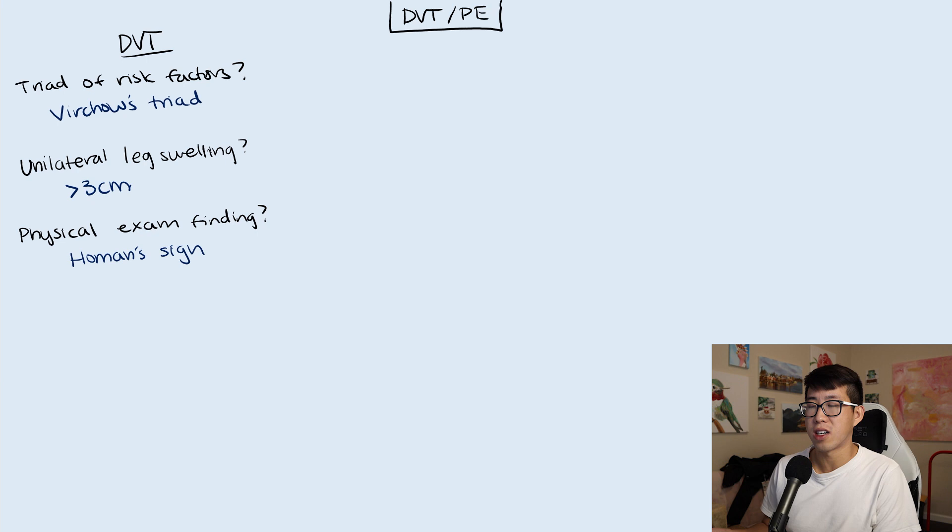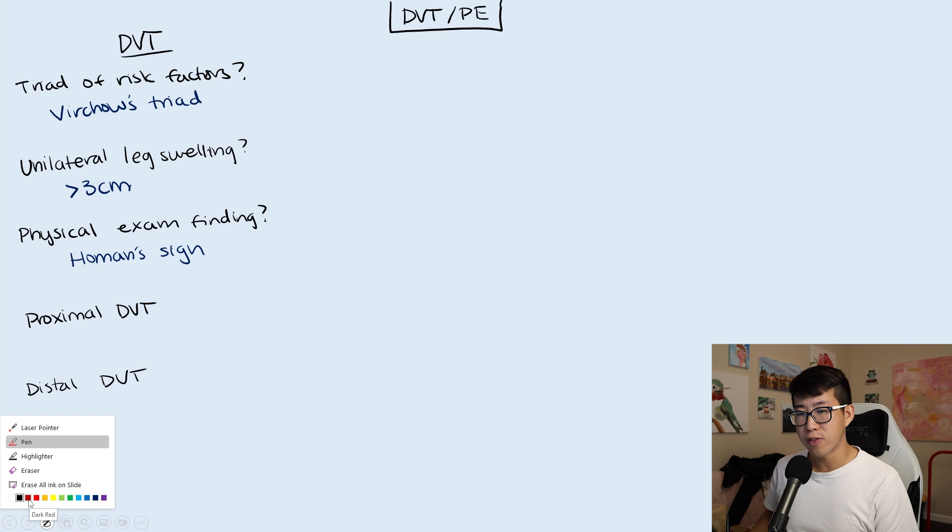Finally, what do you consider a proximal DVT? And what is the treatment for that versus a distal DVT? Proximal DVT is anything located above the knee, whereas distal DVT is below the knee.